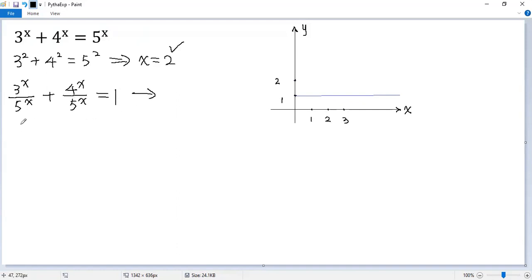We can write the left side as (3/5)^x + (4/5)^x = 1. We denote it as equation 1.